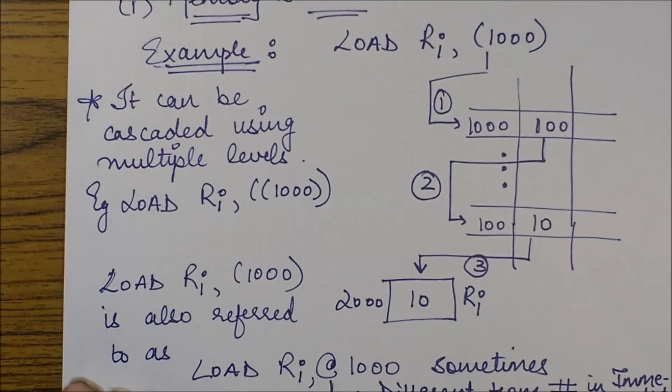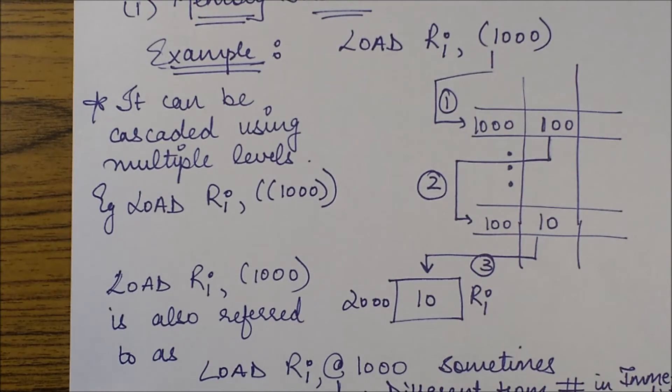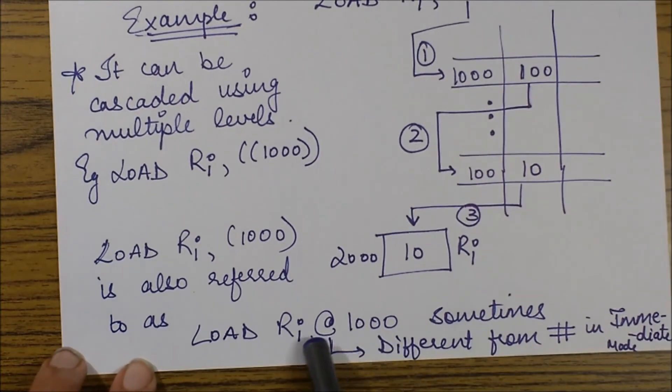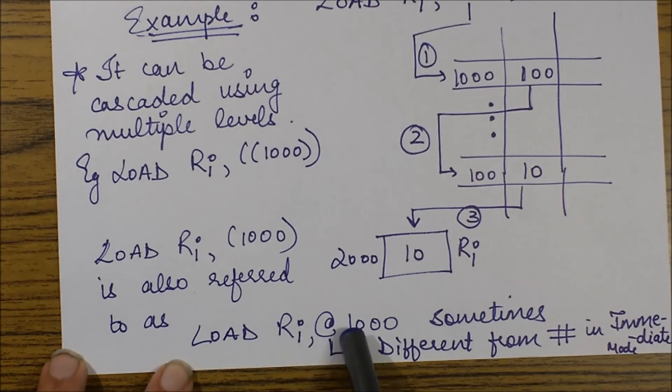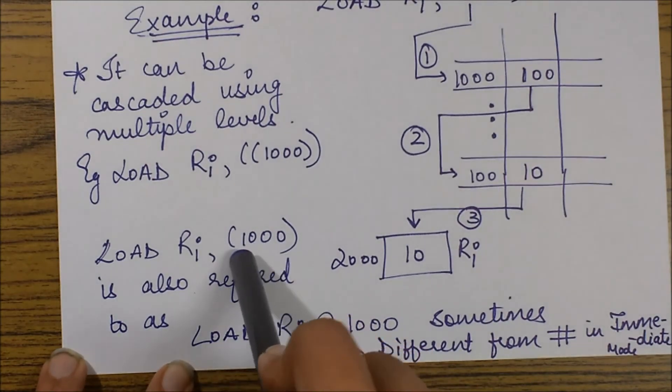So the next thing I wanted to state over here was that this load Ri, (1000) is also referred to as load Ri, @1000. So it is specified with an @ symbol also in some of the textbooks. So please make sure that whenever you encounter this, it is equivalent to this.